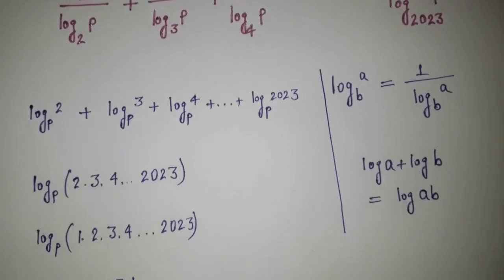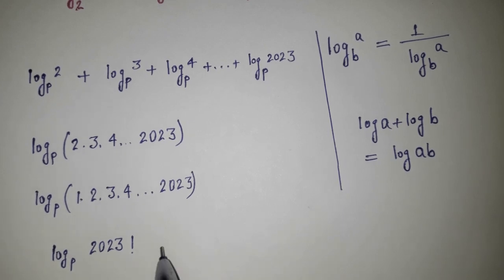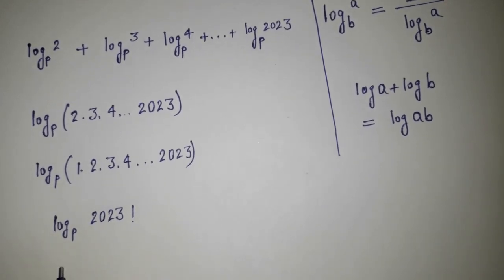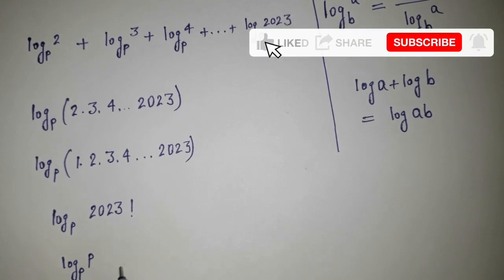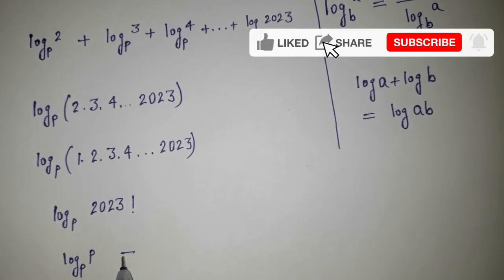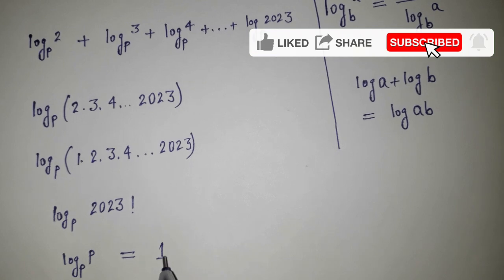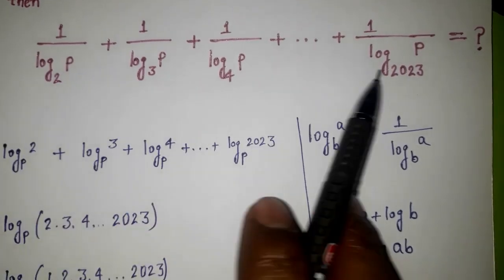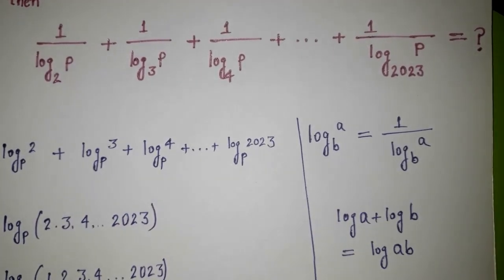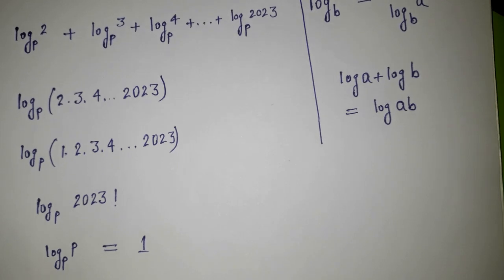So I'm just going to use here log base P of P. And this can be written as P. So here both are same, base and this one, both are same. So it is giving us one. Therefore, the sum of all these quantities is one. So one is our final answer.